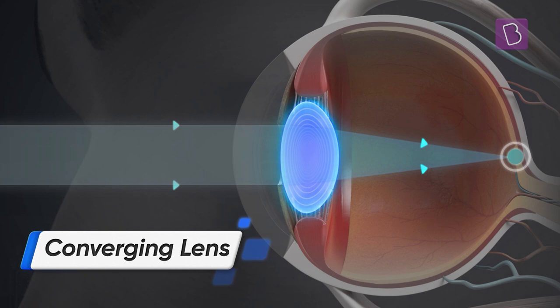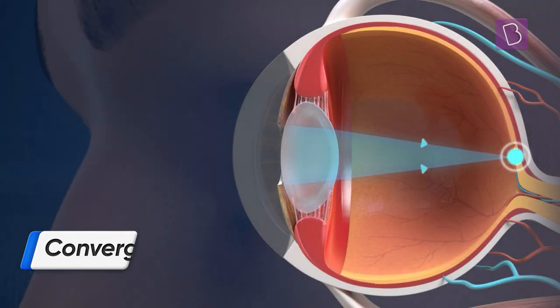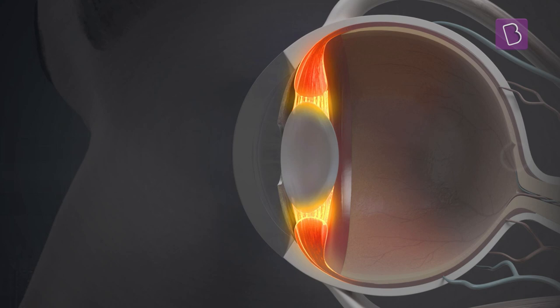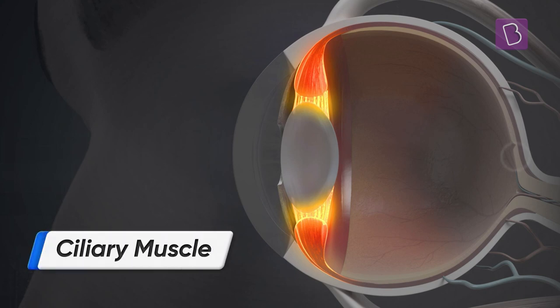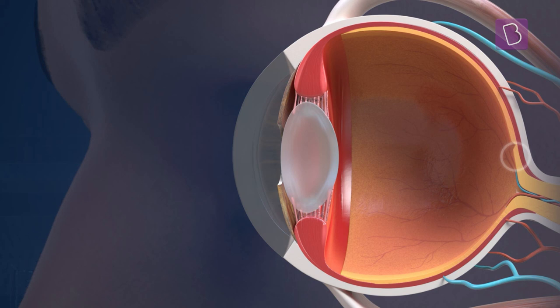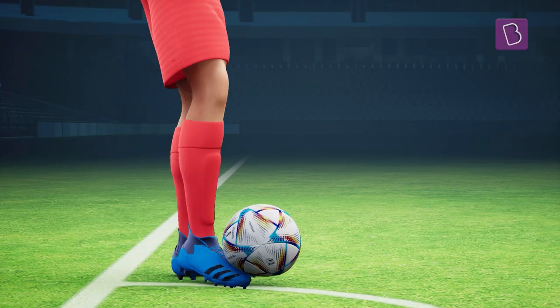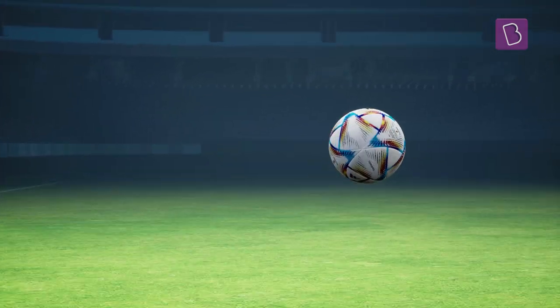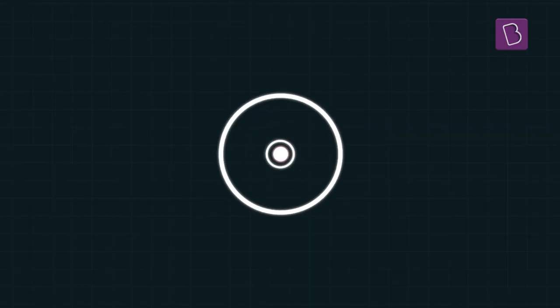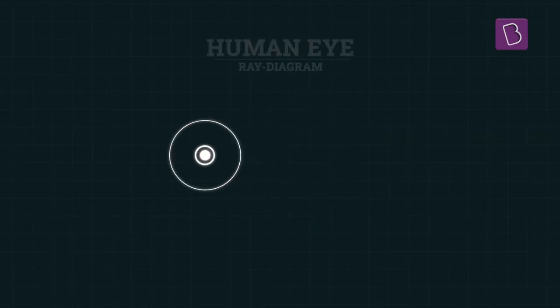Plus, around the eye a ring of smooth muscles exist, called the ciliary muscle. To understand the way the eye adjusts to focus on the ball throughout, let's assume the ball to be a point source emitting light.